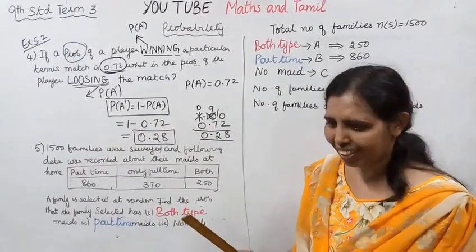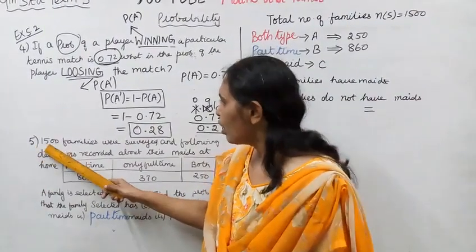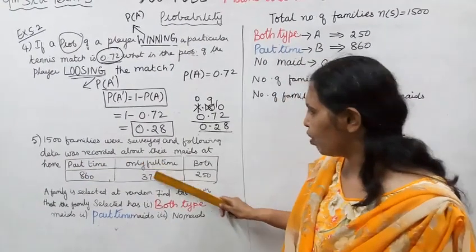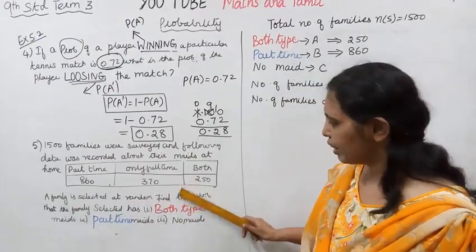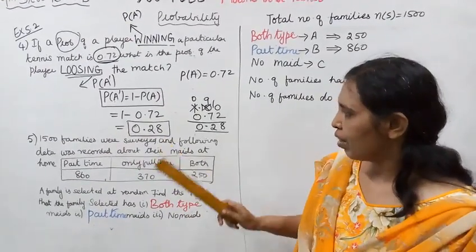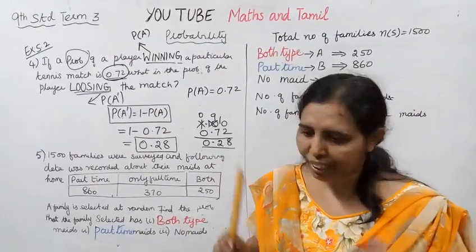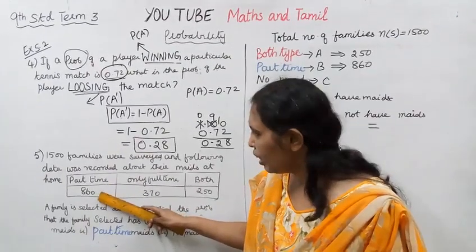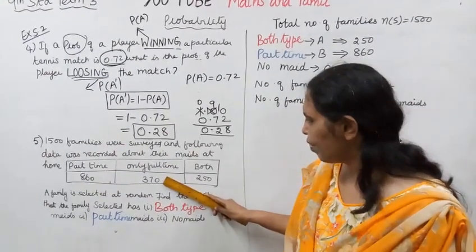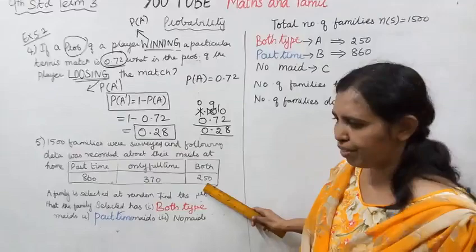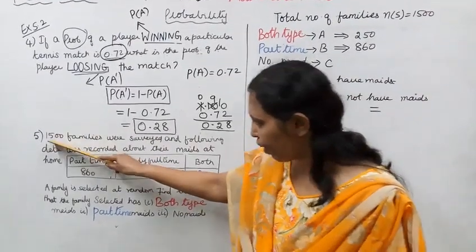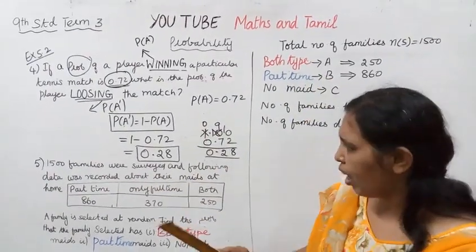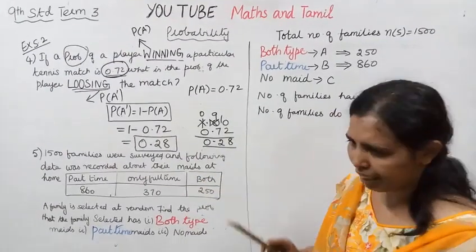1500 families were surveyed and the following data was recorded about their maids at home: 860 only full-time, 370 both part-time and full-time, 250 both types. A family is selected at random. The total is 1500 families surveyed — home maids: 860 full-time, 370 part-time, 250 both.